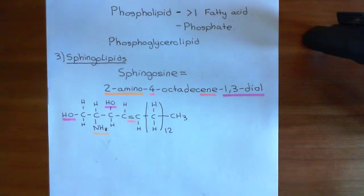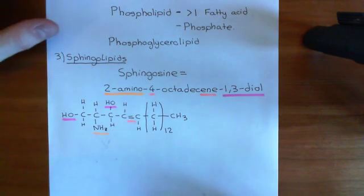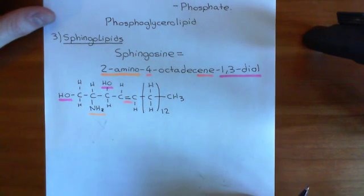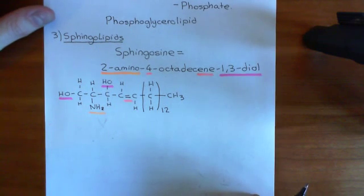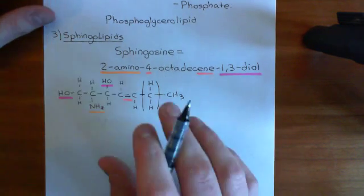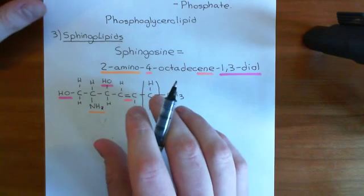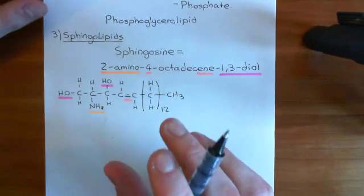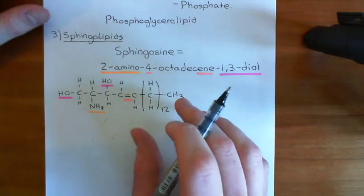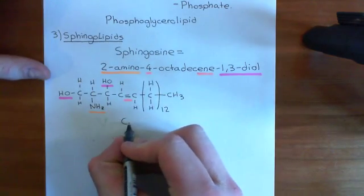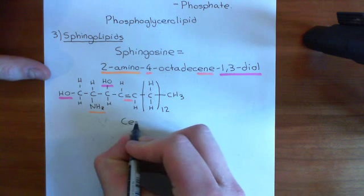Welcome back to this next video in which we are discussing the different types of lipid molecules. We're in the process of discussing the sphingolipids, which are based on the structure of sphingosine. Now, before we can discuss what a sphingolipid is, we firstly need to discuss what a ceramide is.